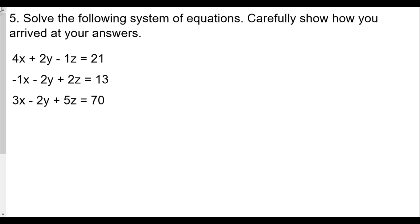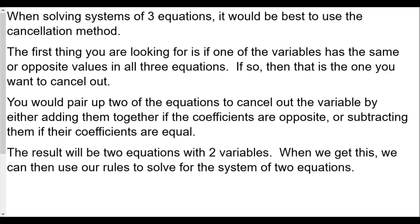Question five: solve the following system of equations; carefully show how you arrived at your answers. This time we don't know anything about x, y, or z, so we need a plan. When solving a system of three equations, it's best to use the elimination method. Look for a variable that has the same or opposite coefficients in the equations, then pair up equations to cancel that variable out, yielding two equations with two variables — which we can solve as before.